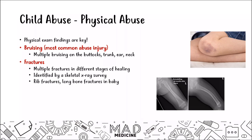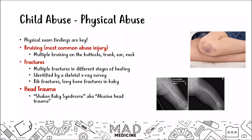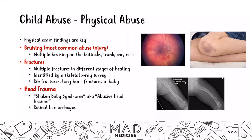You will also see evidence of head trauma, known as shaken baby syndrome. This occurs when a caregiver shakes the baby aggressively to make them stop crying, causing the brain to hit the skull repeatedly. One hallmark of shaken baby syndrome is retinal hemorrhages — we have a photo here showing the optic disc, the macula, and tiny hemorrhagic spots throughout. A subdural hematoma can also result from the brain hitting the inside of the skull.